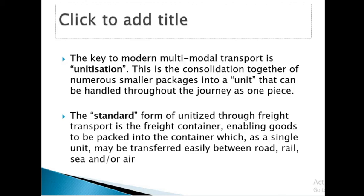The standard form of unitized transport is the freight container, enabling goods to be packed into a container which, as a single unit, may be transferred easily between road, rail, and sea. Normally, air is not always possible because the container used on road, rail, and sea is not the same container used on aircraft. They have their own special containers — the goods must be removed from the sea container and placed in an aircraft container before they go. So normally this container can be used on road, rail, and sea, but not always with air.